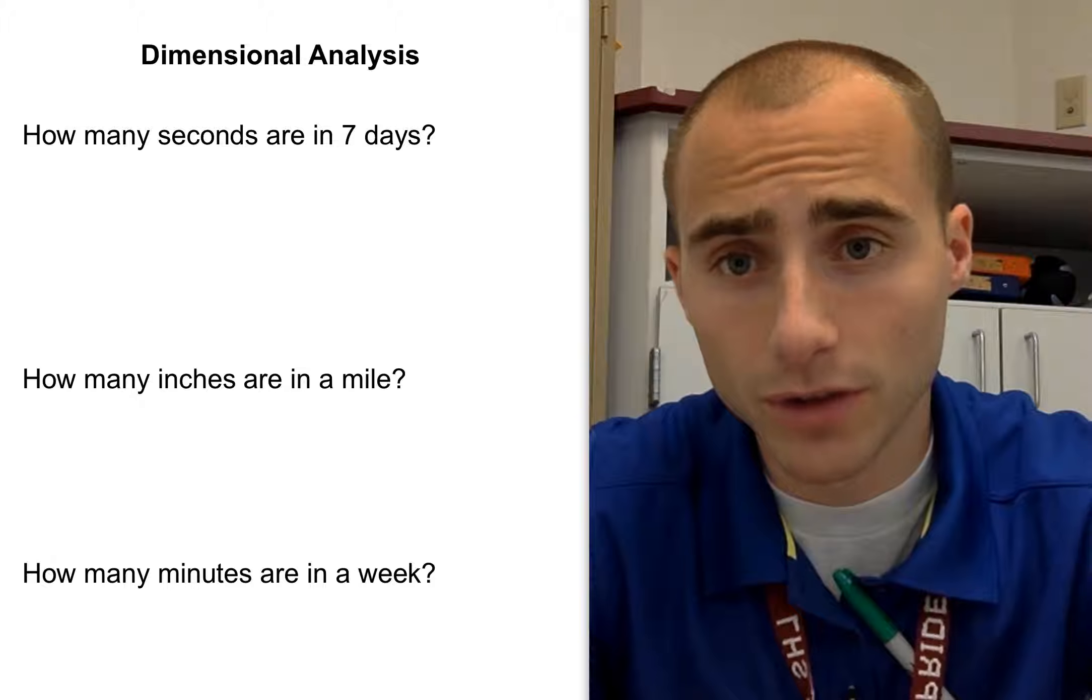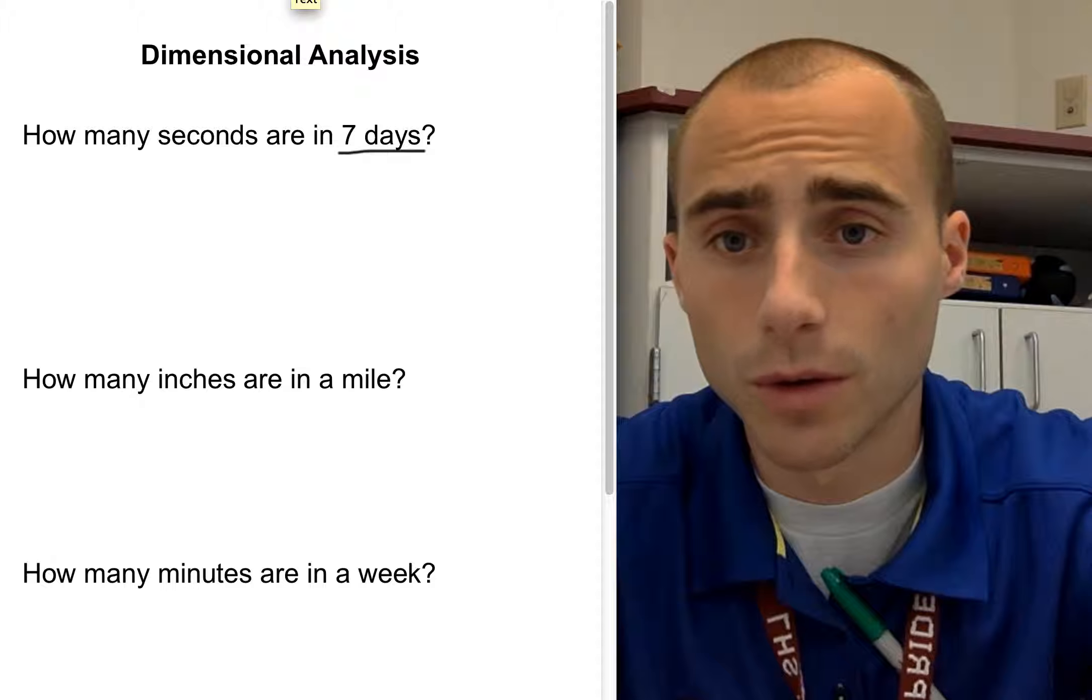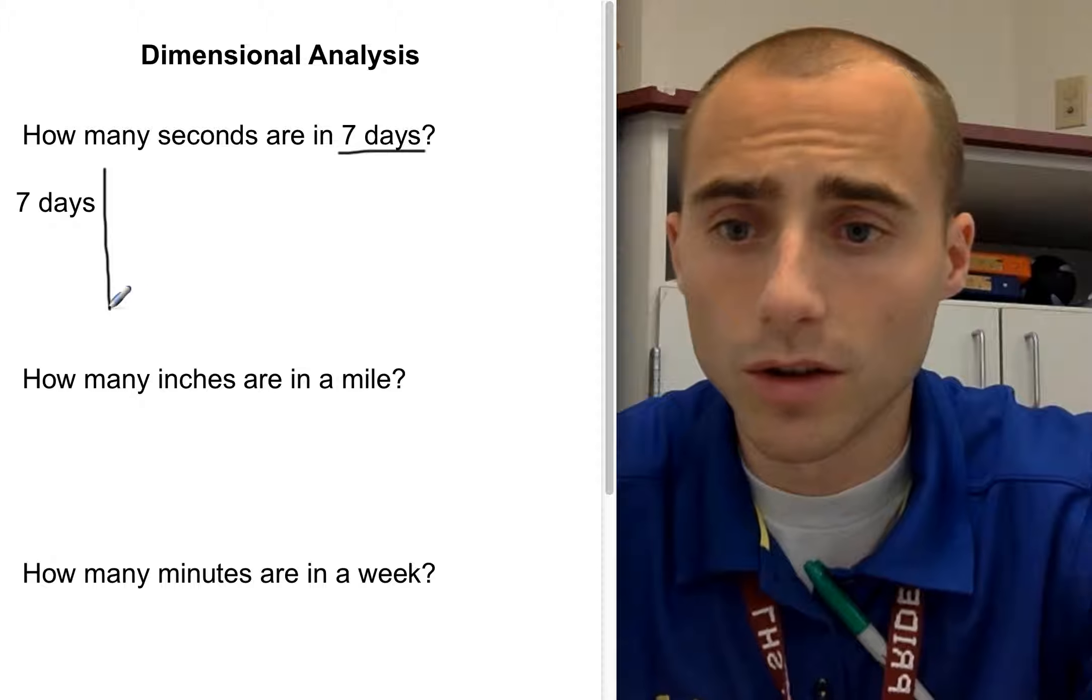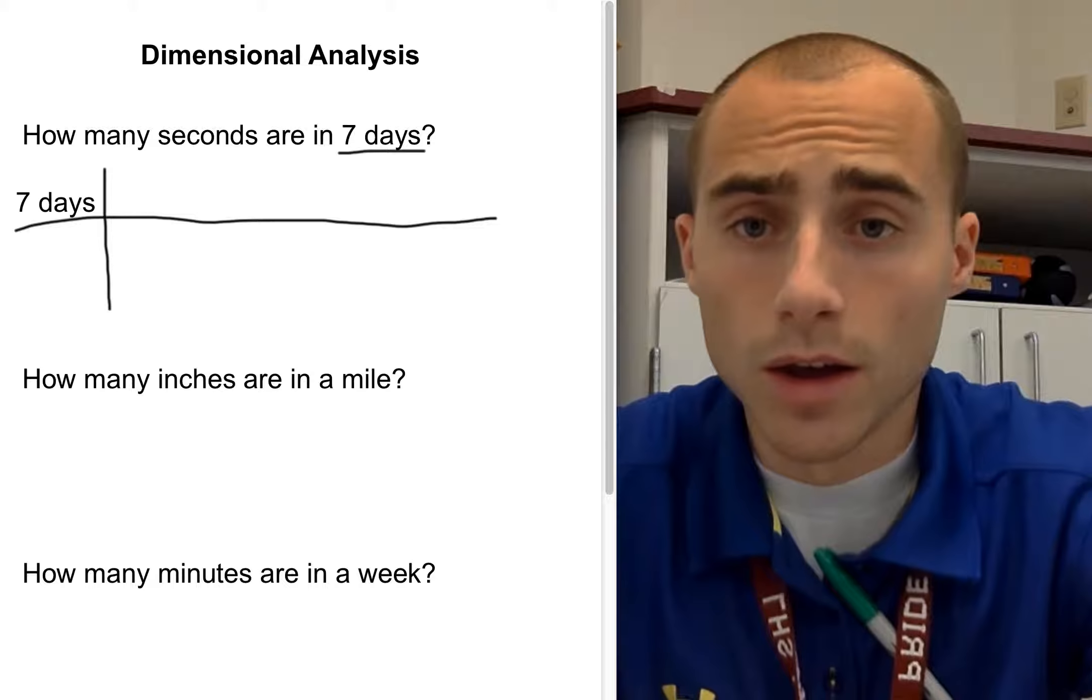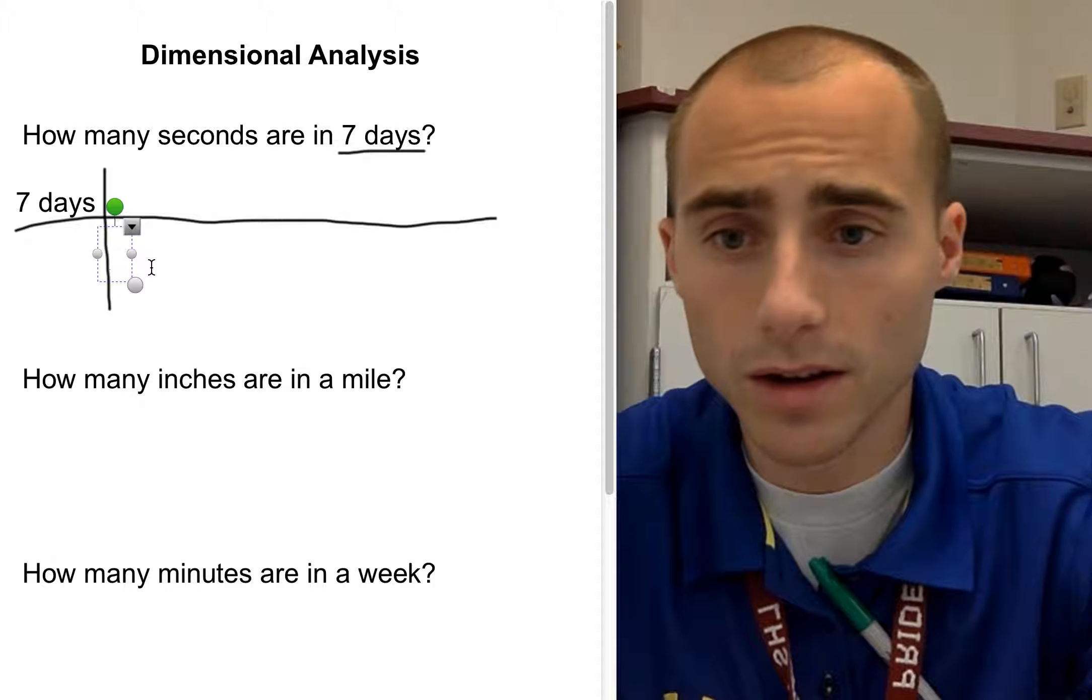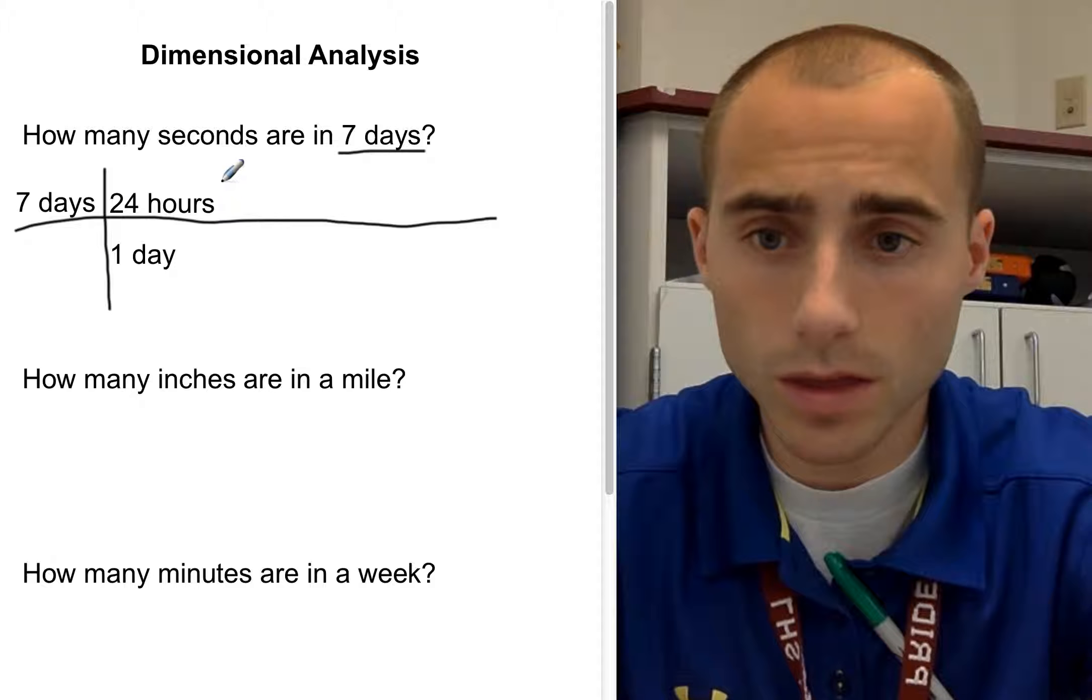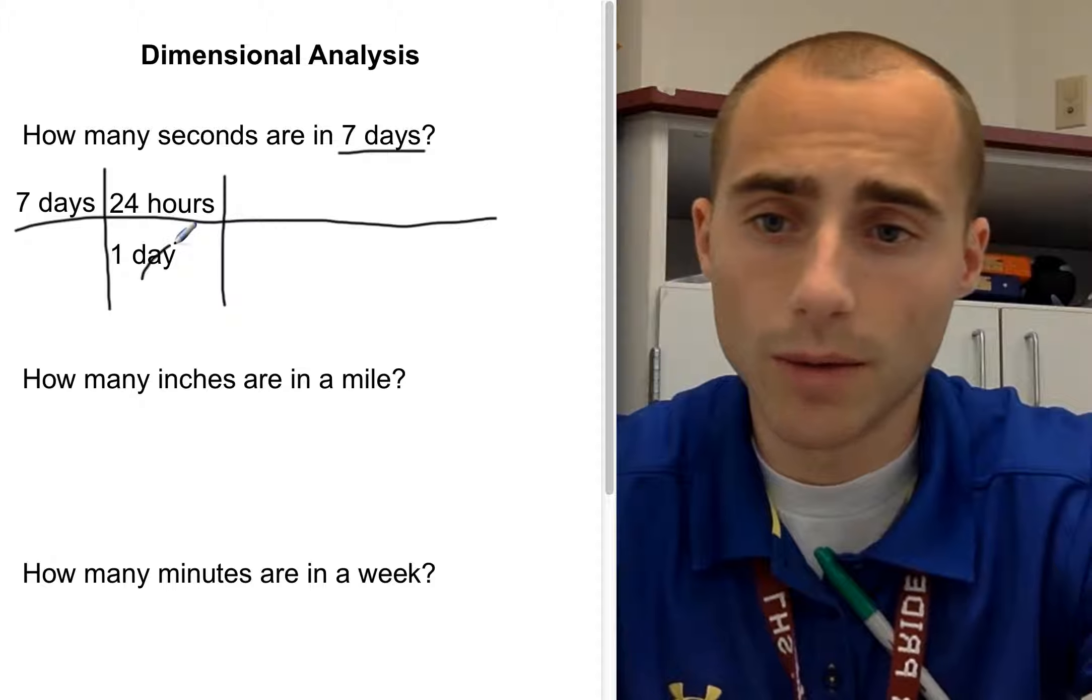So for example, if we're looking at this first question, the very first thing you want to do is write down your given and then set up your railroad track solving method. So you have how many seconds are in seven days. We'll start off by writing down seven days. That is what we have been given. Then you want to set up your railroad track method here to try and work this all out. So seven days. First, I want to be able to cancel out days, right? So down here we have to get all the way down to seconds. So I'll put right here, we have one day and in one day we have 24 hours. And the nice thing about doing that is what we have just done by putting seven days, one day, and then 24 hours. We're now with hours and we can cancel out days.